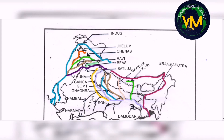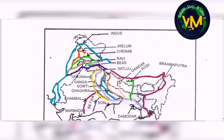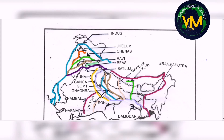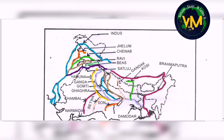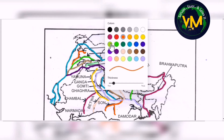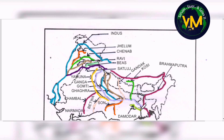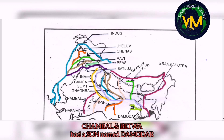Now coming to the rivers that originate from central India and join Yamuna and Ganga. We have River Chambal and Betwa, the tributaries of River Yamuna. Mark Chambal from its starting point and end it till where it touches Yamuna. Same with River Betwa. Then we have other tributaries of River Ganga: River Son — end it till where it touches Ganga — and River Damodar. To remember these four rivers: 'Chambal and Betwa had a son named Damodar.'